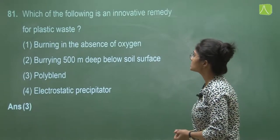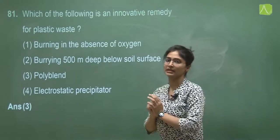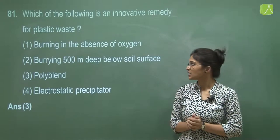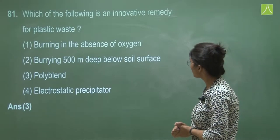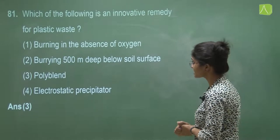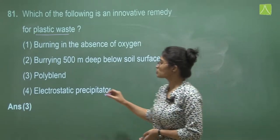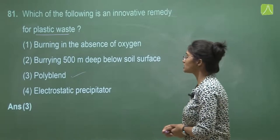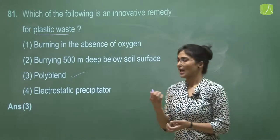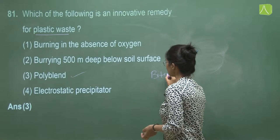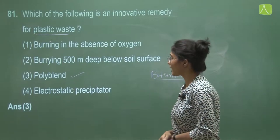Question 81 asks which is an innovative remedy for plastic waste, from the NCERT chapter on environmental issues. Burning in the absence of oxygen — no. Burying deep below soil surface — no. Option three is polyblend. Ahmed Khan developed a polyblend from plastic waste; by mixing it with bitumen, many roads were laid. The answer is option three.